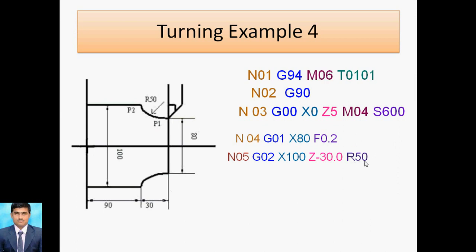After the arc, block N06 uses G01 linear interpolation. X is 100 (same diameter) and Z is minus 120 — calculated as 90 plus 30. So G01 X100 Z minus 120. Block N07 is spindle stop M05, and the last block is M30 program end. That completes turning example four with circular interpolation.